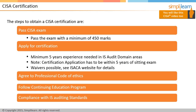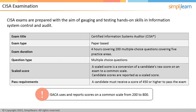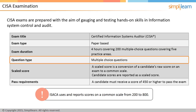The CESA exam questions are prepared with the intent of measuring and testing practical knowledge and hands-on skills in information system control and audit. It is a paper-based exam that consists of 200 multiple-choice questions covering 5 practice areas, which must be completed within a 4-hour period.